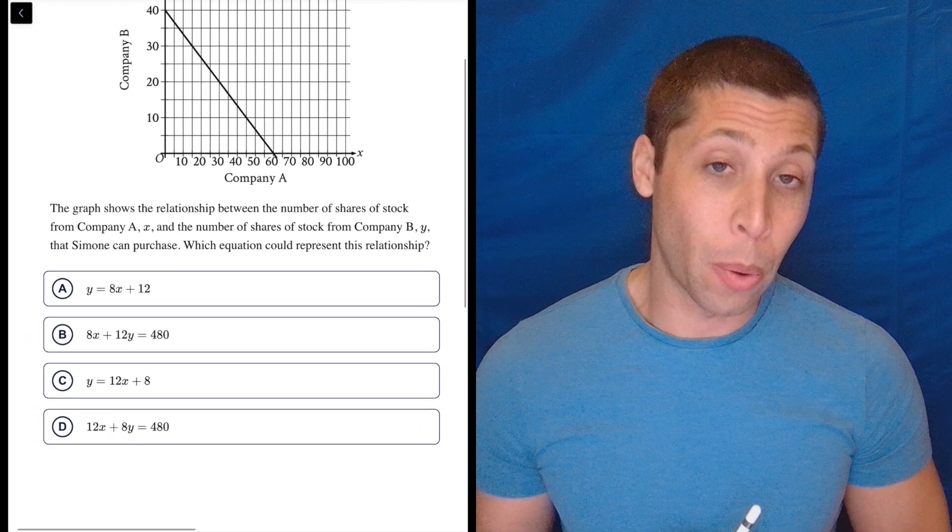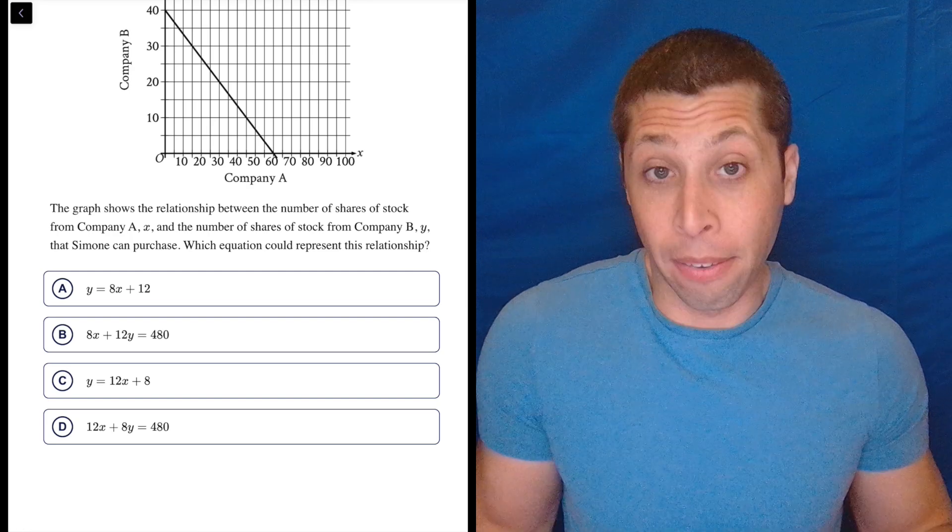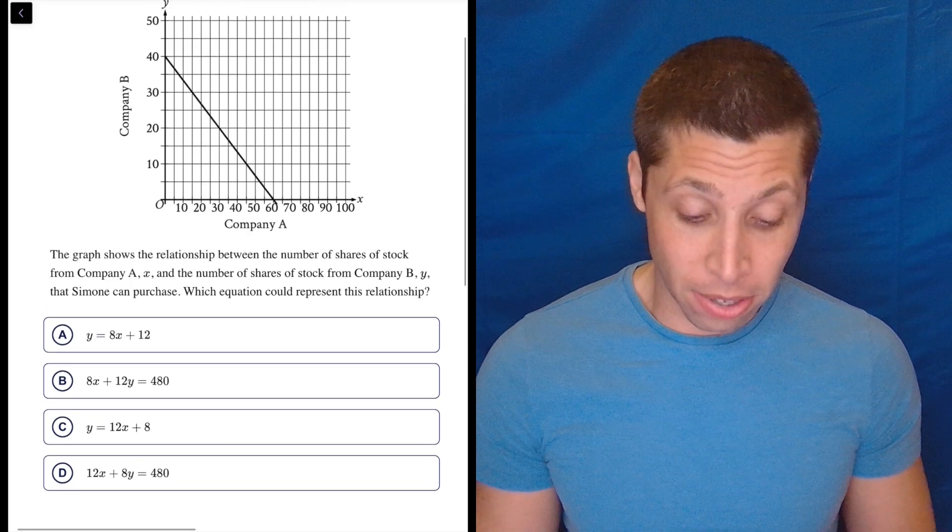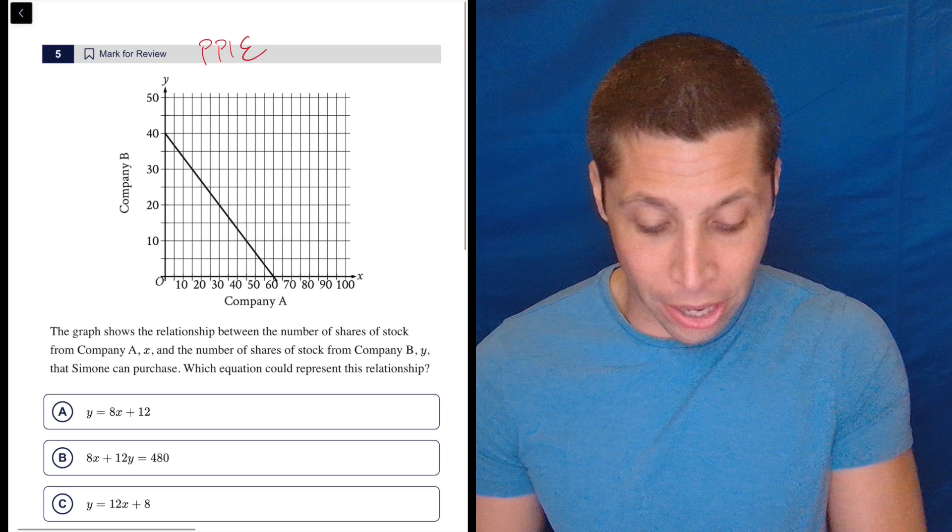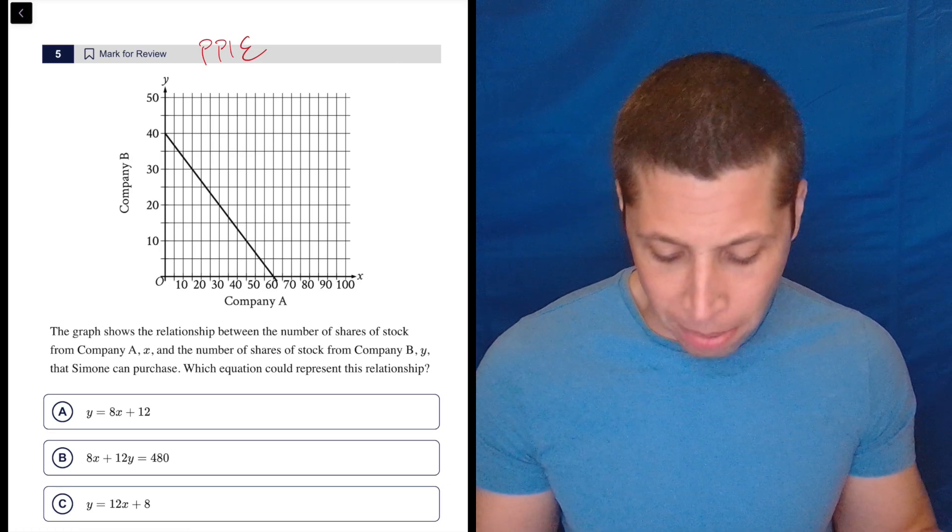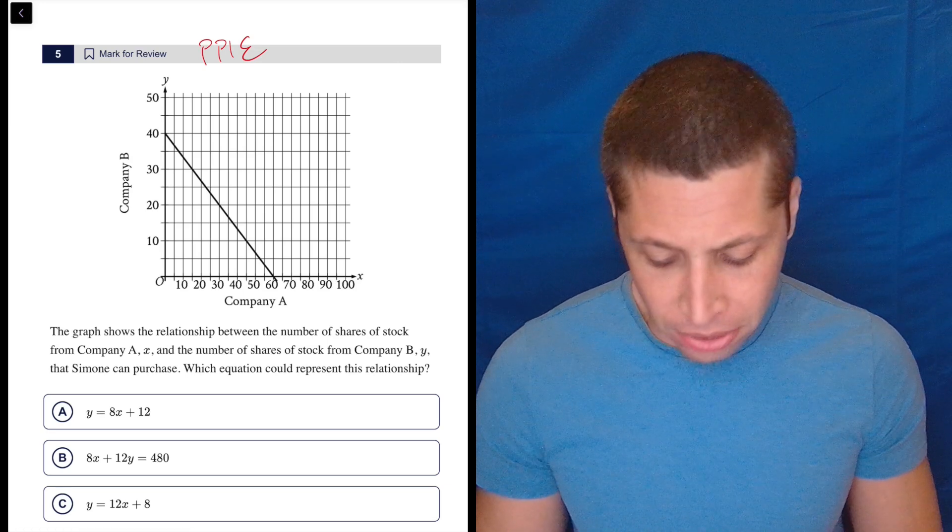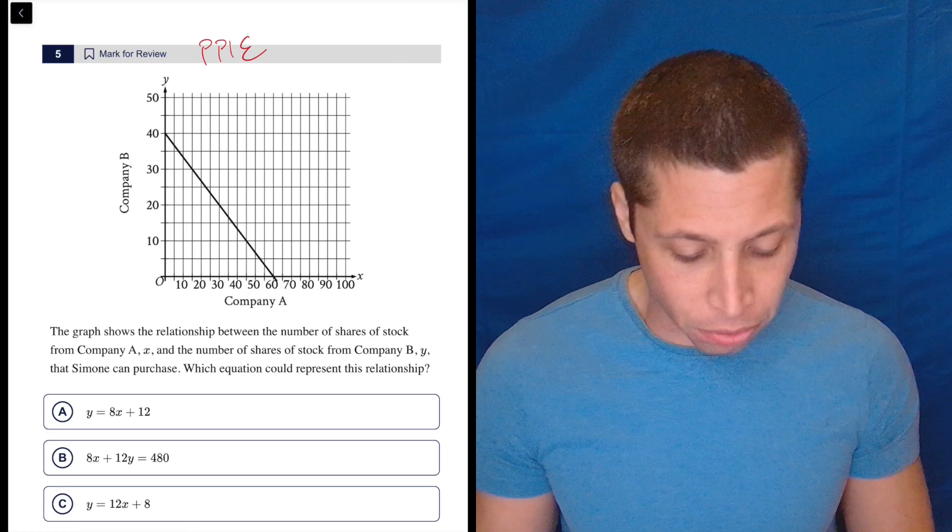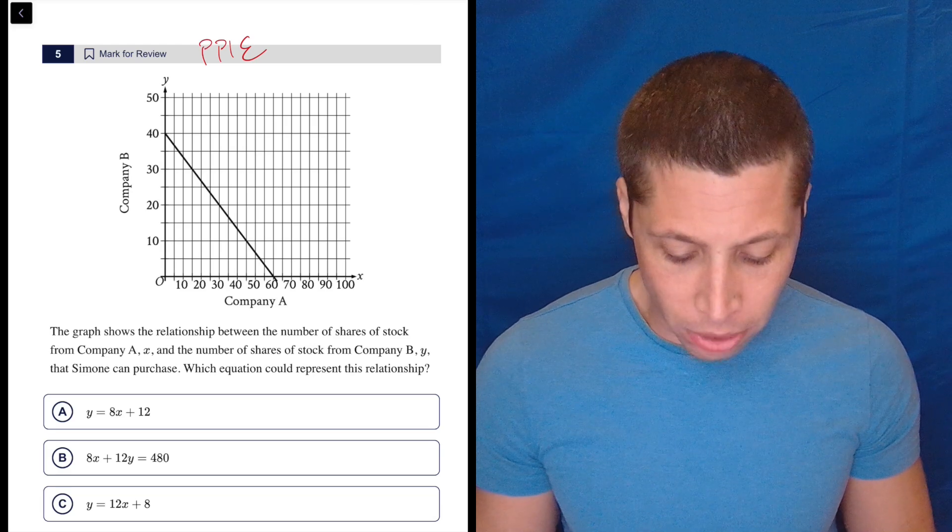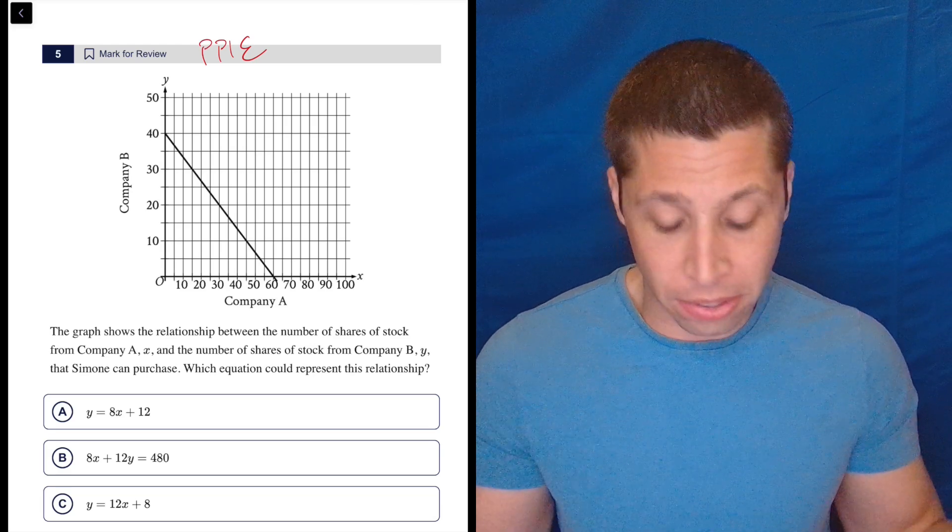I have a bunch of equations in the choices, I have some points because that's what a graph is. So I'm going to use the plug points into equations strategy. So this story doesn't matter. The graph shows the relationship between the number of shares of stock from company A, X, and the number of shares of stock from company B, Y, that Simone can purchase, which equation could represent this relationship.